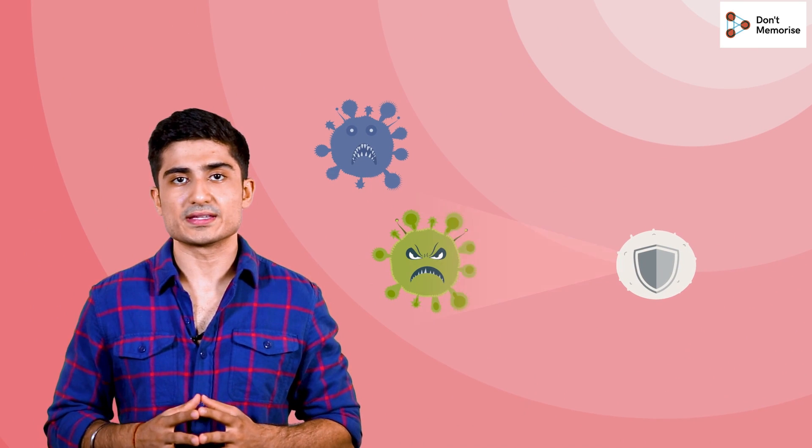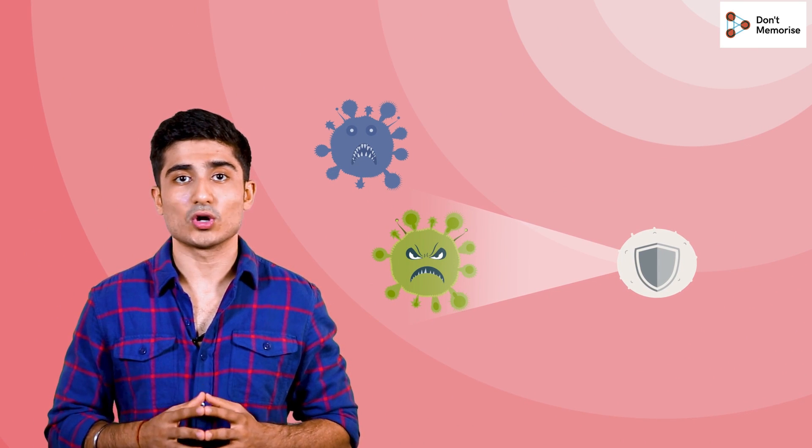When we fall ill due to infections caused by germs, also known as antigens, our immune system identifies antigens as foreign organisms and reacts by making proteins called antibodies.